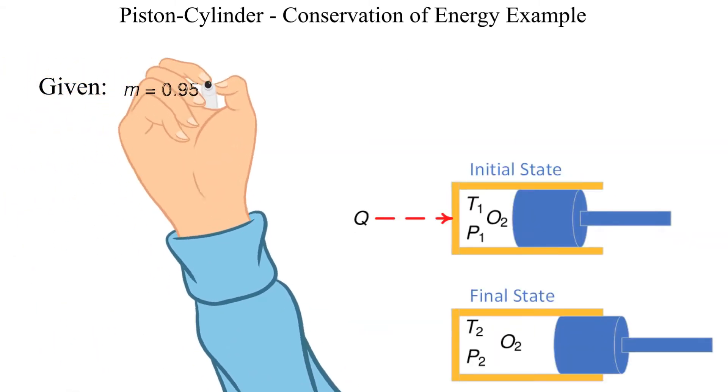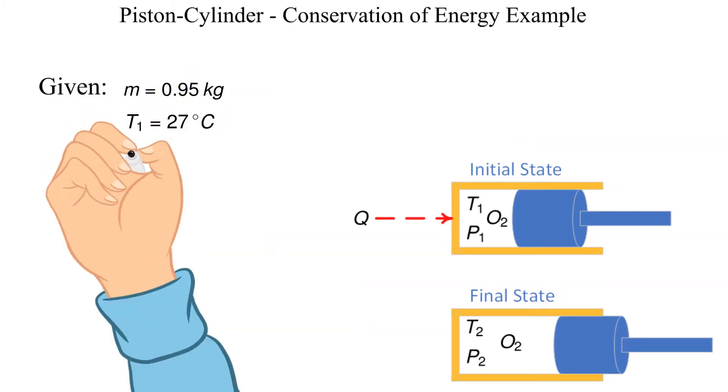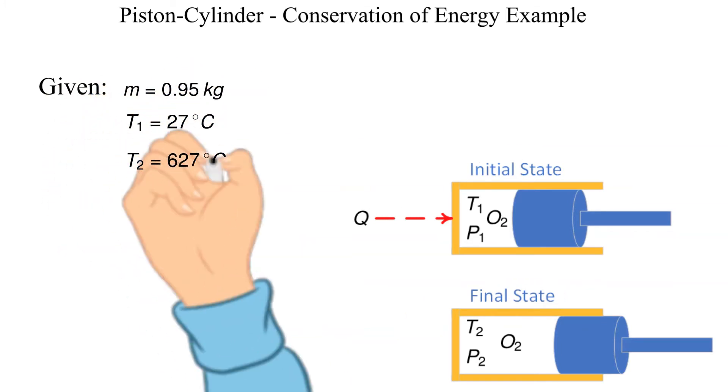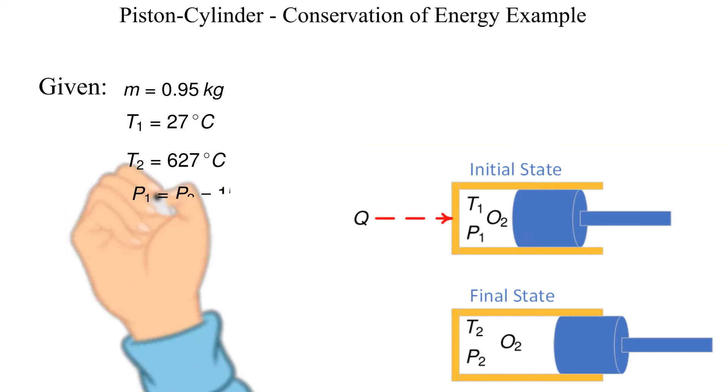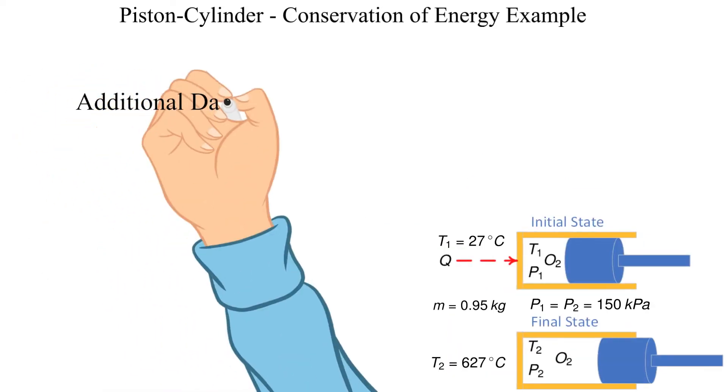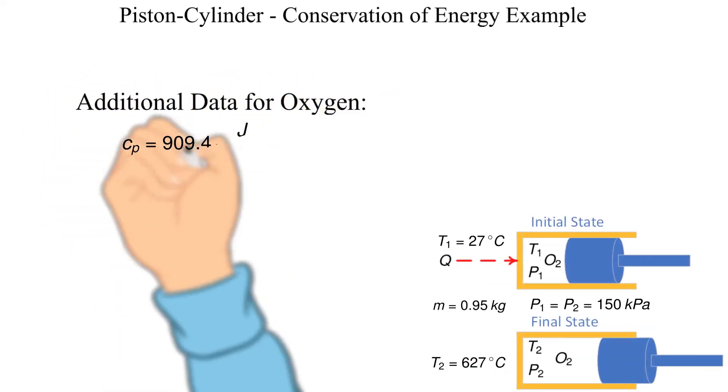Here is the provided data. Mass of oxygen, T1, the pressure for states 1 and 2, and T2 are provided. Our goal is to find the energy or heat transfer added to the oxygen from state 1 to state 2. Before we get started we will also need the specific heat for a constant pressure process, which is provided here.